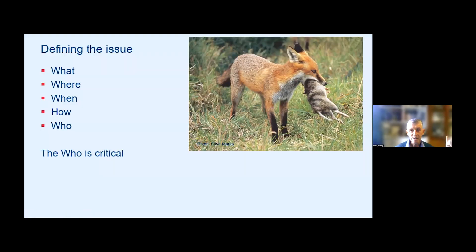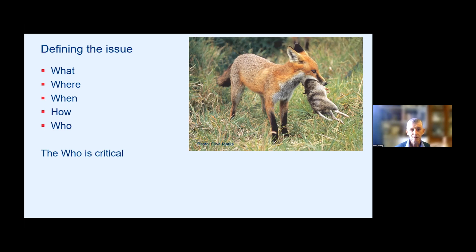One of the things you need to do when defining the problem — and something that was touched on earlier — is the 'why', which talks about the motivations of people to participate in a group control or management program. What is the problem? Is it a conservation asset you want to protect? What is the cost in terms of control? What is the cost in terms of losses of the asset? You need some idea of the measurement of that before you go in, or as part of your management plan while you're undertaking the first bits of control.